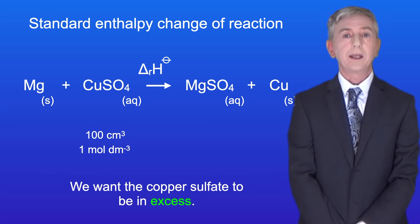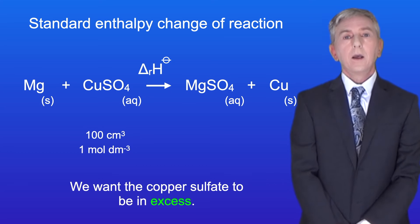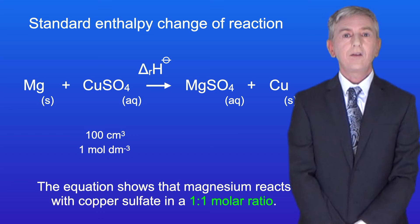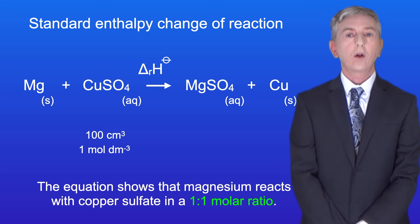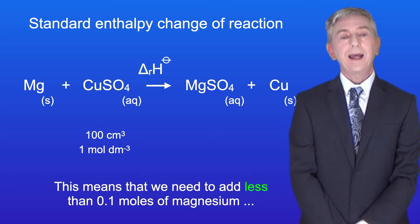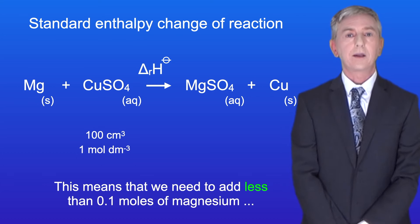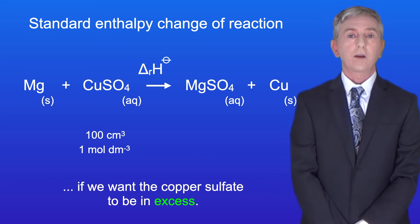We want the copper sulfate to be in excess. The equation shows that magnesium reacts with copper sulfate in a 1 to 1 molar ratio. This means that we need to add less than 0.1 moles of magnesium if we want the copper sulfate to be in excess.